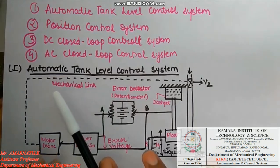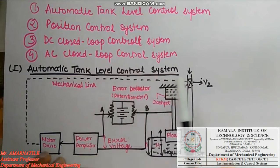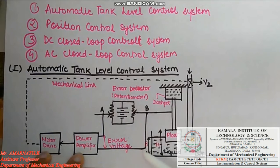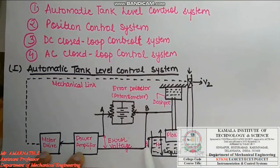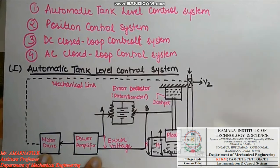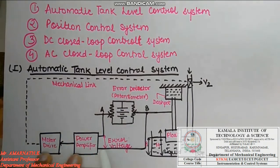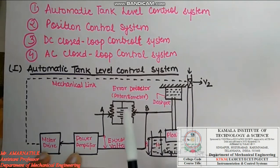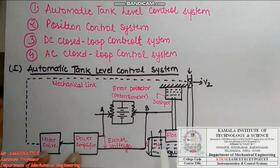Coming to the first application — automatic tank level control system. We have studied this experiment using a software called SCADA, in which the water level is maintained at the required set position capital H, with the water output level in a tank denoted as small h. Water flows outward through gate valve V1, while water flows inward by lifting gate valve V2. An error detector finds the difference between small h and capital H, and a motor and power amplifier are used as feedback elements.